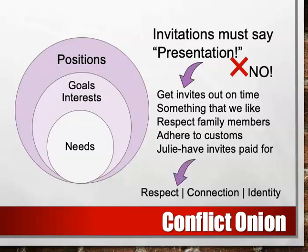When dealing with intractable conflicts — that is, conflicts that are persistently difficult to solve and have taken on a life of their own — it is often necessary to start off by talking about universally shared needs. This is because the parties involved might not be willing to even consider each other's goals and interests at that time. Working with conflict often involves moving from positions to goals, interests, and needs. Thinking through this using an onion diagram offers a handy way to clarify what these are.